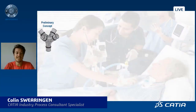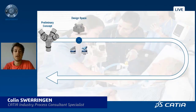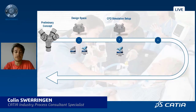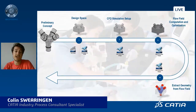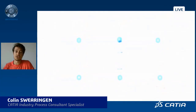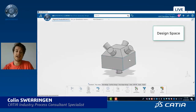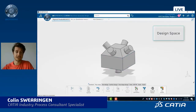What we're seeing here is the generalized workflow of what we did to optimize this flow splitter. We started with a preliminary concept and, using tools in the 3DEXPERIENCE platform, we intended to utilize our new flow-driven generative designer role to optimize the flow path for this particular design. The objective was to minimize pressure drop and see if we could get a more efficient device.